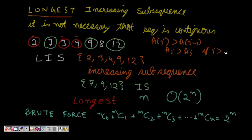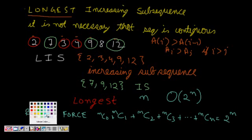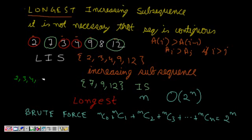So here we have a sequence of numbers: 2, 3, 4, 9, and 12 — this is an increasing subsequence, a subset of the array that is all increasing. Similarly I could have chosen 2, 3, 4, 8, and 12 — that's also an increasing subsequence. Or I could have 7, 9, and 12, which is also an increasing subsequence.